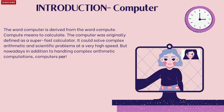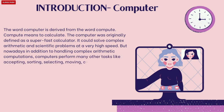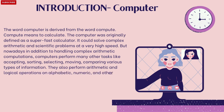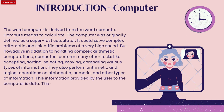But nowadays, in addition to handling complex arithmetic computations, computers perform many other tasks like accepting, sorting, selecting, moving, and comparing various types of information. They also perform arithmetic and logical operations on alphabetic, numeric, and other types of information. This information provided by the user to the computer is called data.